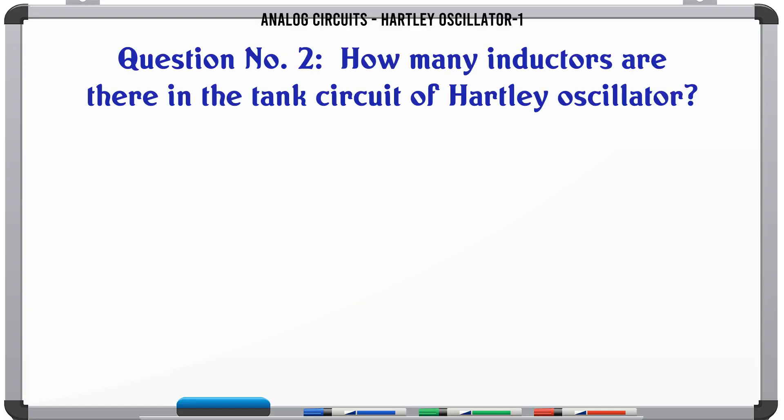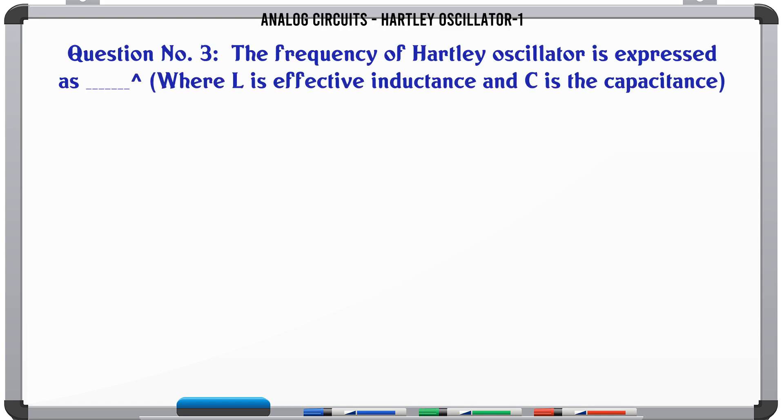How many inductors are there in the tank circuit of Hartley Oscillator? A: 1, B: 2, C: 3, D: 0. The correct answer is 2. The frequency of Hartley Oscillator is expressed as, where L is effective inductance and